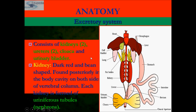The excretory system of the frog consists of two kidneys, two ureters, one cloaca which is the outside opening, and one urinary bladder. The kidney in the frog is dark red in color, bean-shaped, and is found posteriorly in the body cavity on both sides of the vertebral column.